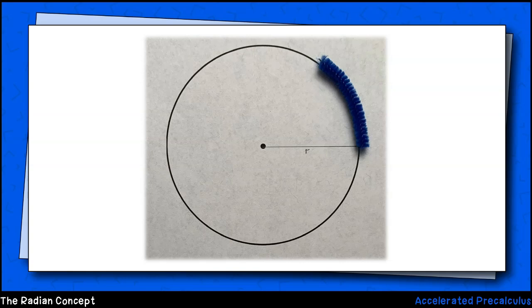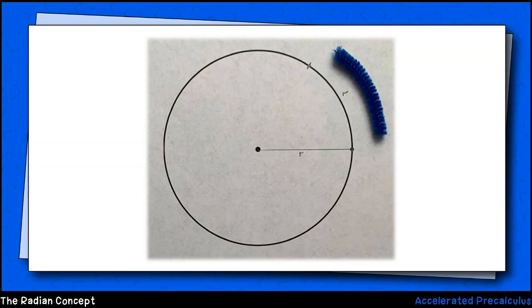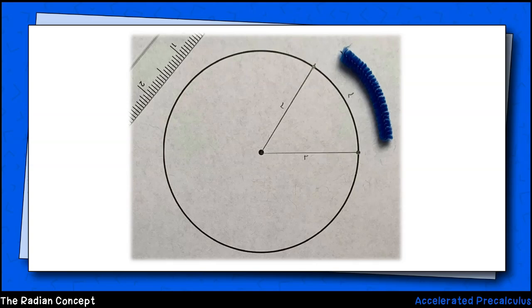Now I'm going to take my bendable pipe cleaner, whose length is one radius, and I'll measure out an arc on my circle as such. I'll place a little point on my circle to indicate the endpoint of the arc. Next, I'll use my straight edge again to measure a radius out to the endpoint of my arc.